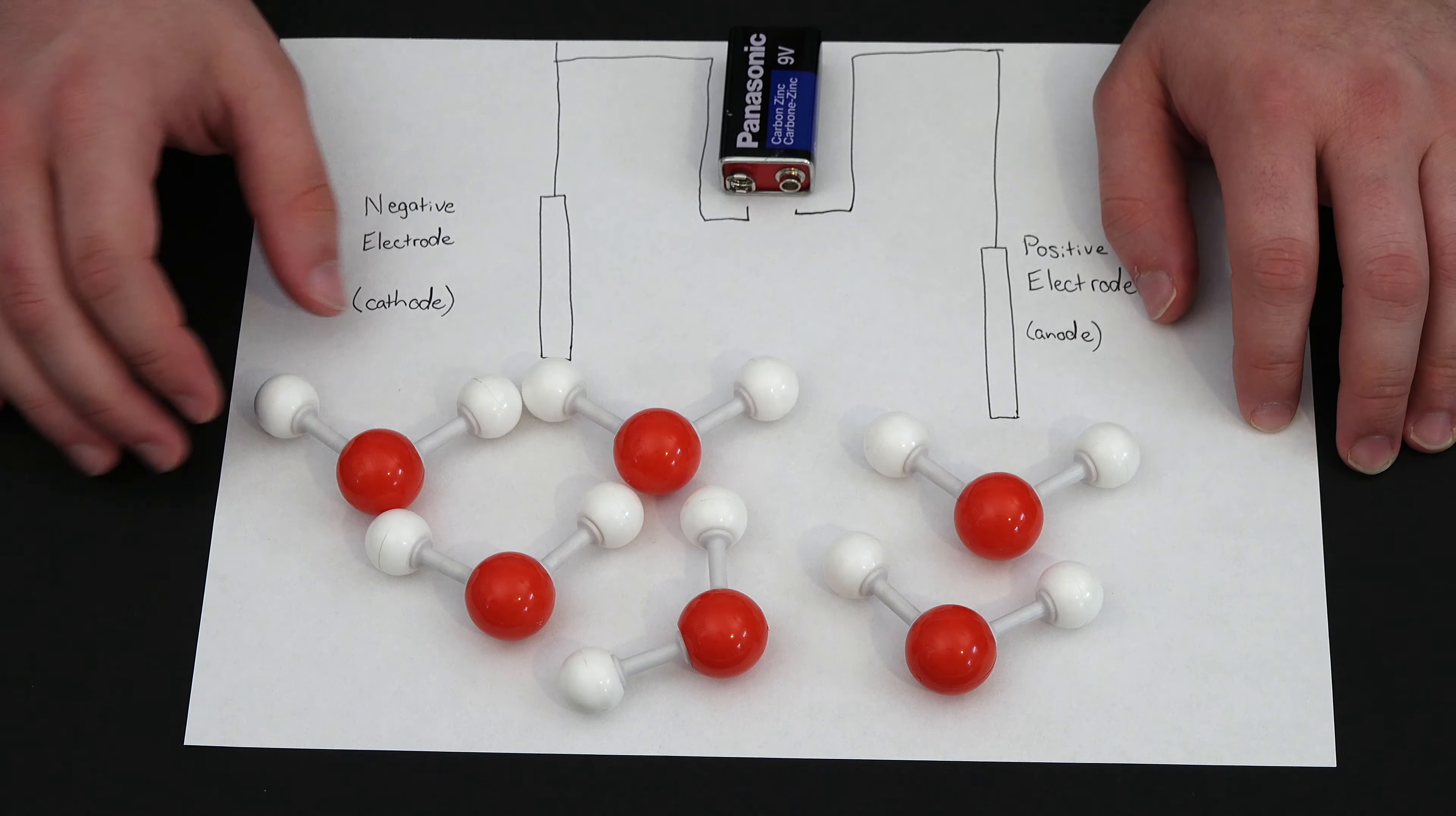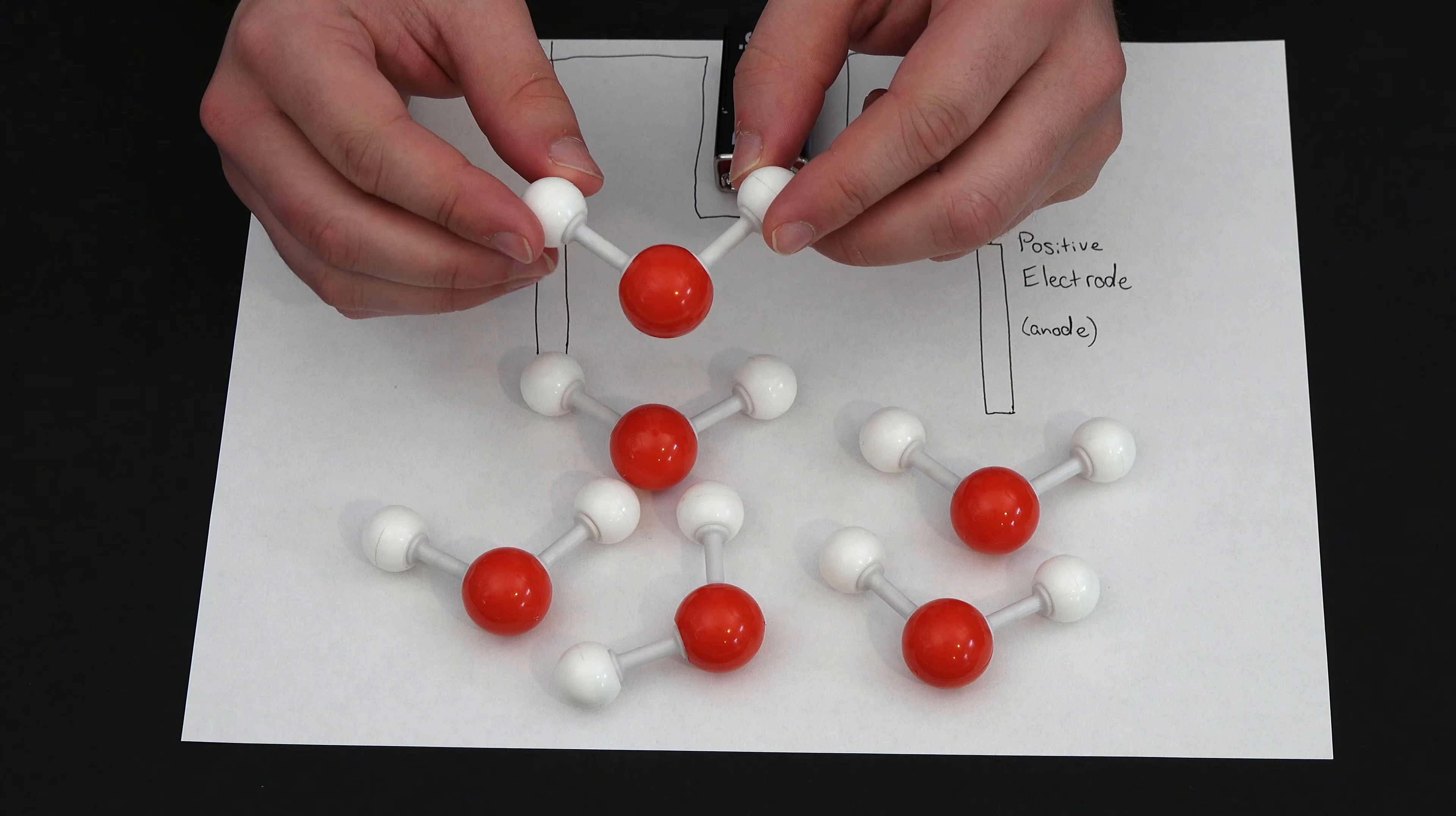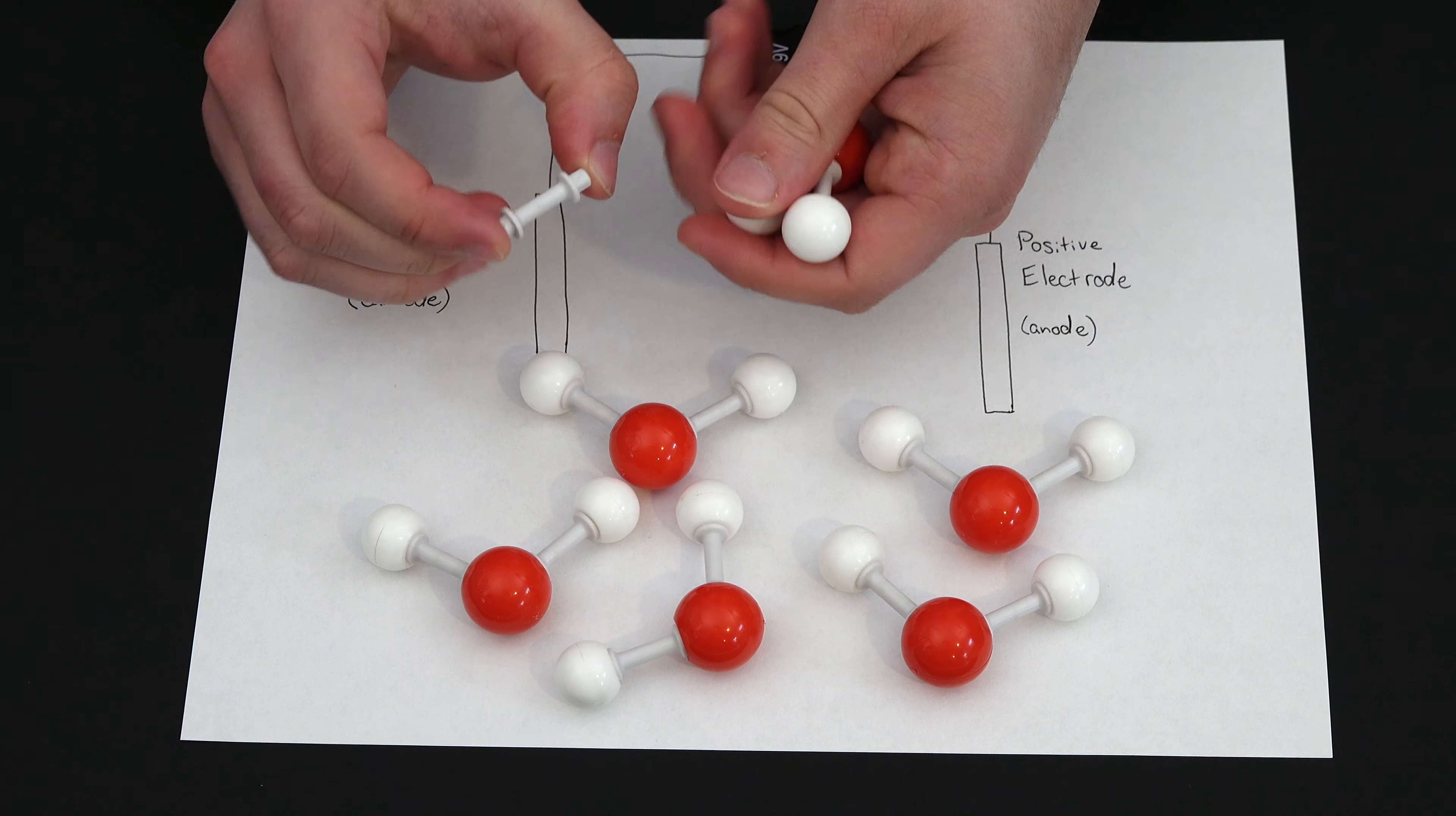So first off we need to explain how this model will work. So obviously this is a water molecule. Red sphere is an oxygen atom, white sphere is a hydrogen atom.